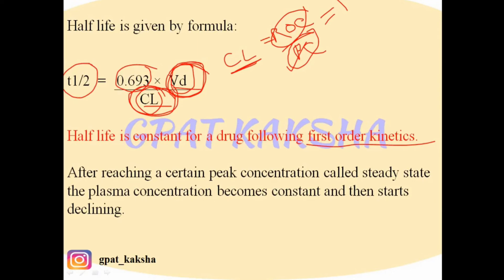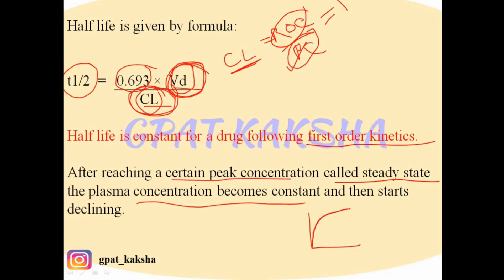After reaching a certain peak concentration called steady state, the plasma concentration becomes constant. If a drug is administered by IV infusion, the concentration rises and after reaching a certain peak it becomes constant — this constant region is the steady state plasma concentration. If drug administration is stopped after reaching steady state, the plasma concentration starts declining.